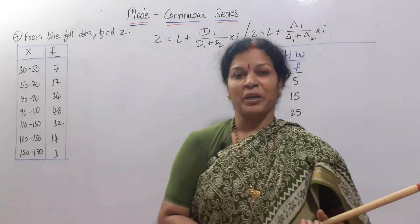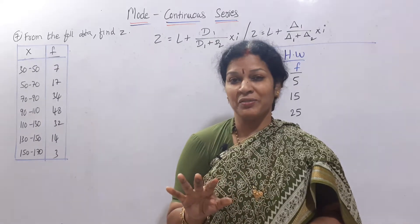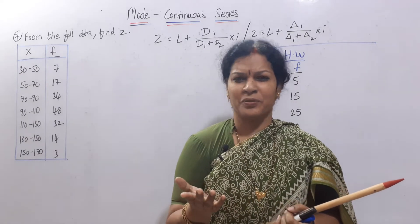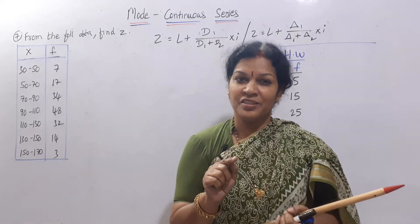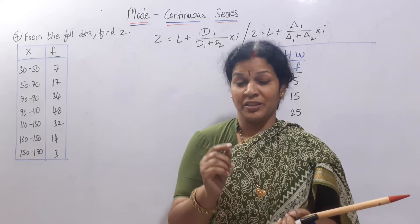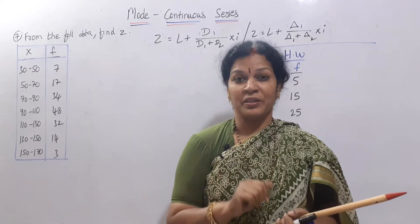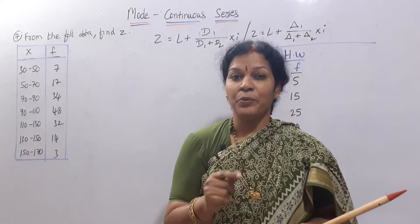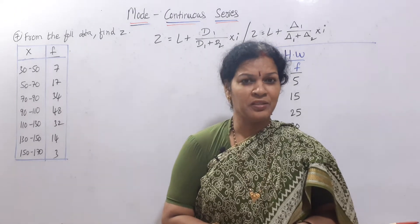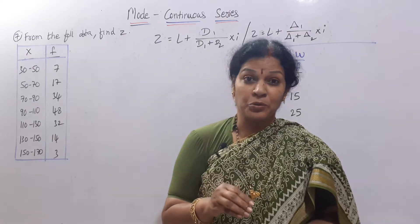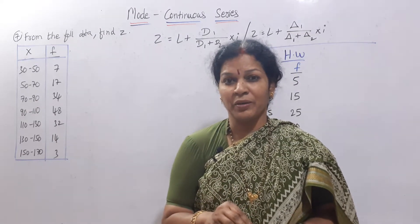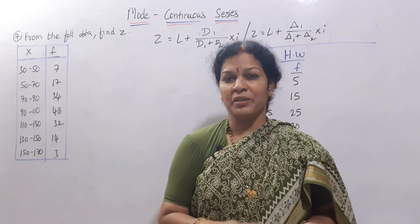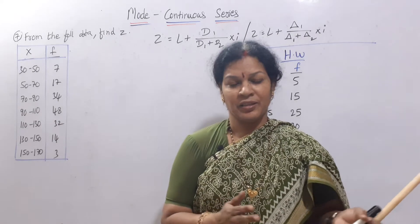Hello dear students, welcome to the Avikos Commerce and Management Academy. Today we will see mode calculations for continuous series — quite easy if you are thorough with discrete series. In discrete series, if the frequency difference is large, we can trace out the mode easily. Otherwise, if the next highest number is close to the highest, we go for a grouping analysis table. If we are still unable to find it, we use the bimodal method with the formula: 3 median minus 2 mean, as done in the last class.